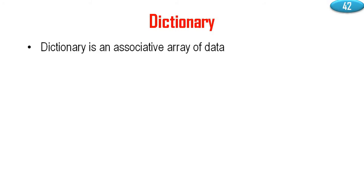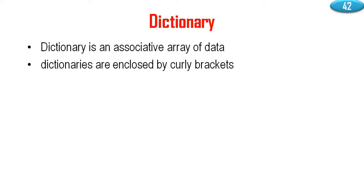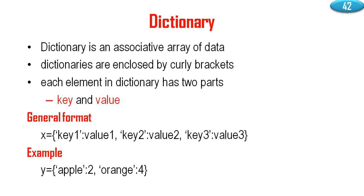Next let us discuss another topic: dictionary. Dictionary is an associative array of data. Dictionary in Python means it's an associative array of data. Dictionaries are enclosed by curly brackets. Each element in the dictionary has two parts: one part is key and one part is value.